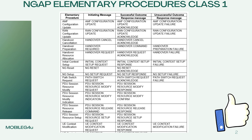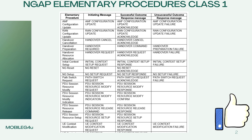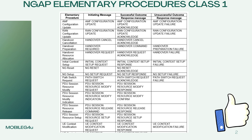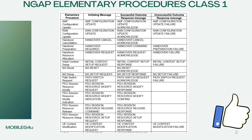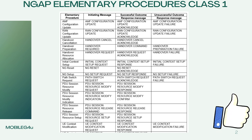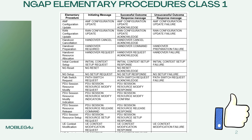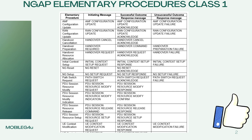There are maybe around 10 to 15 shown here, but there are more than 20 procedures in Class 1. Examples include AMF configuration update, RAN configuration update, handover cancellation, handover preparation — suppose you want to do handover, then preparation will come — handover resource allocation, NG reset, NG setup if you want to set up a connection, path switch request, and PDU session resource modify. All of these are elementary procedures in Class 1.